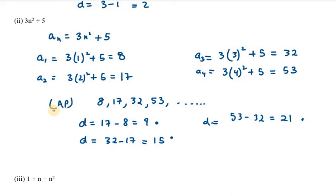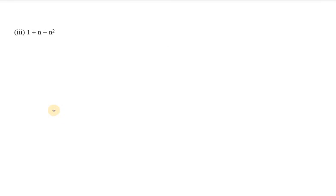Let's find for the third one. It is 1 plus n plus n square. Now we need to find the first 4 values. a1 will be 1 plus 1 plus 1 square, so all the terms are 1, which means 3. Next is 1 plus 2 plus 2 square. 1 plus 2 is 3, 3 plus 4 is 7.